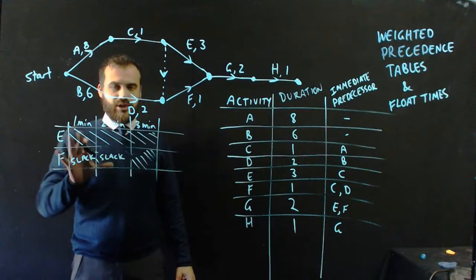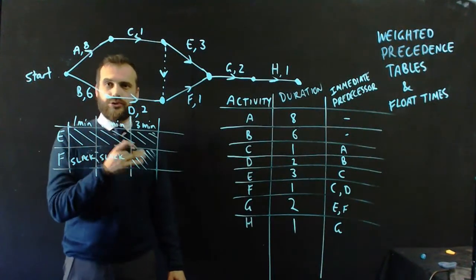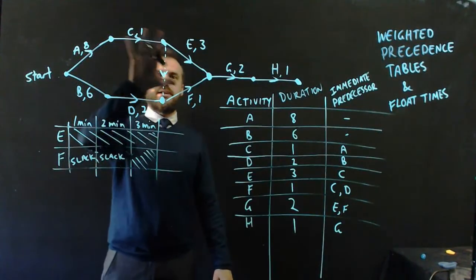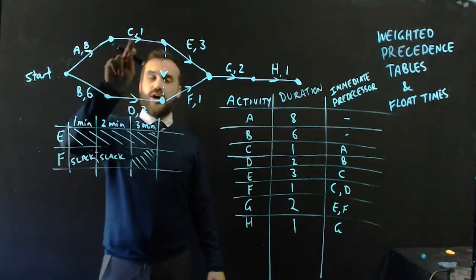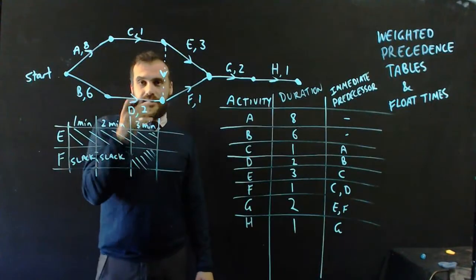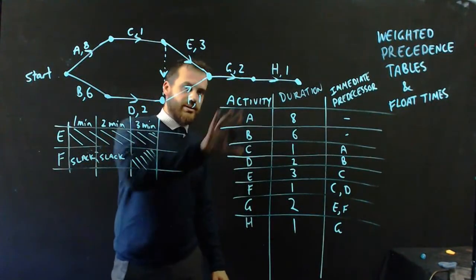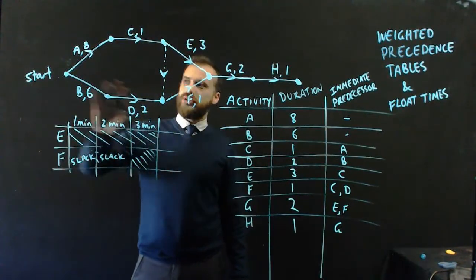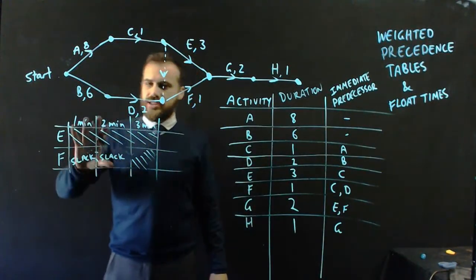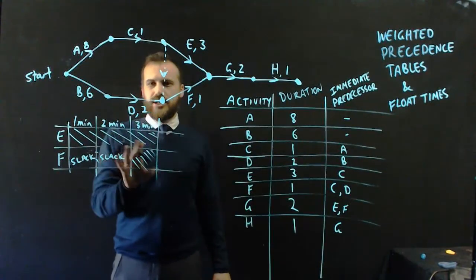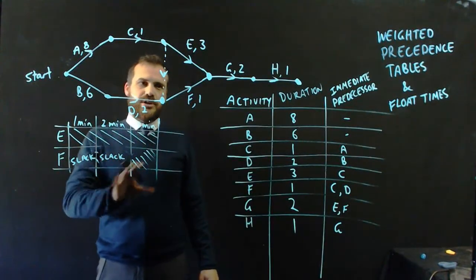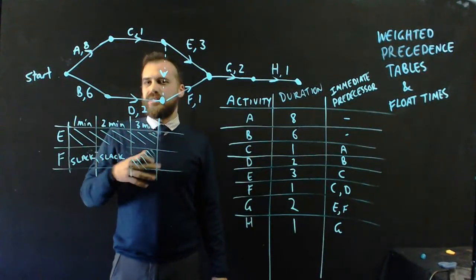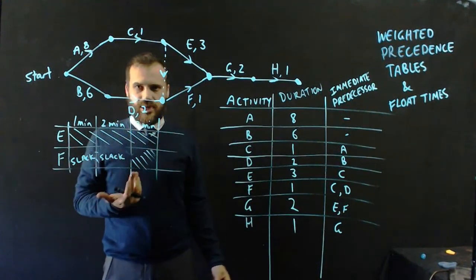That's all I wanted to cover for this video. We really get stuck into what's called critical path analysis in our next video. So just make sure that you understand that this is an activity network, but now with times, which we call a weighted activity network, this is a weighted precedence table, and we should start being able to analyse our network a little bit and start talking about float times. How much slack or how much float does a particular activity have, and when should we start it, or when's the latest or the earliest we should start it?